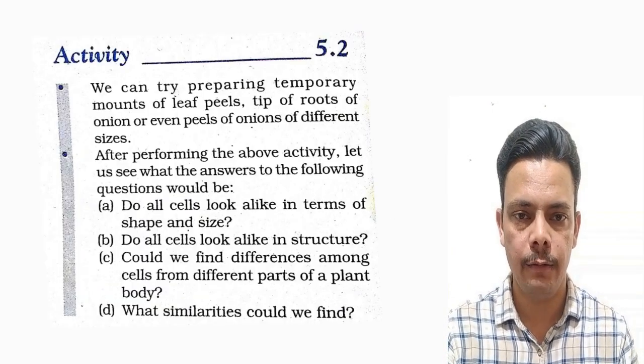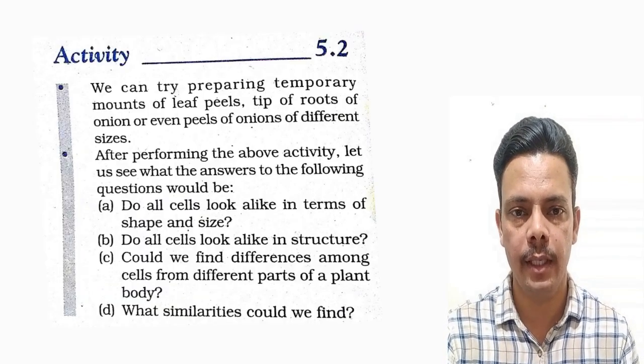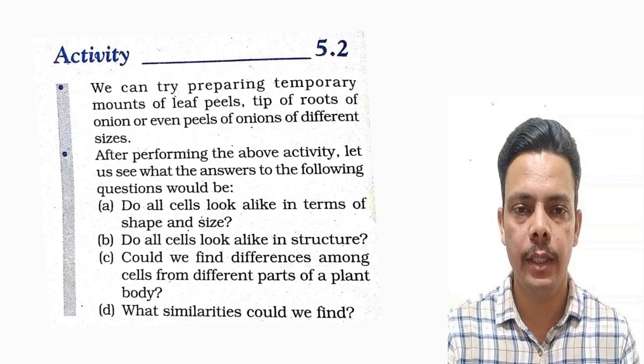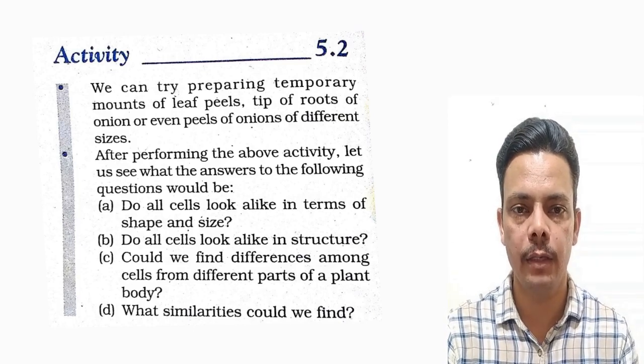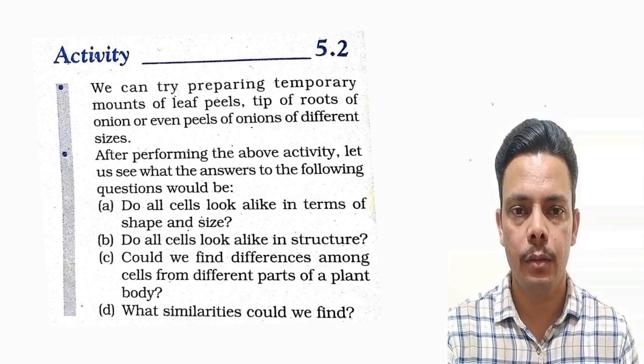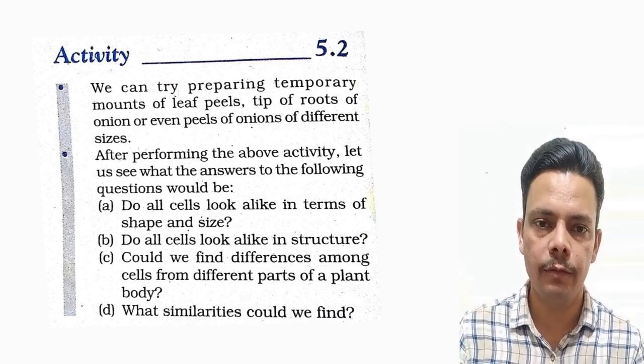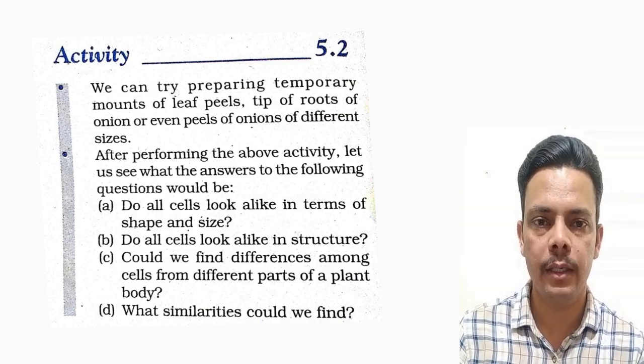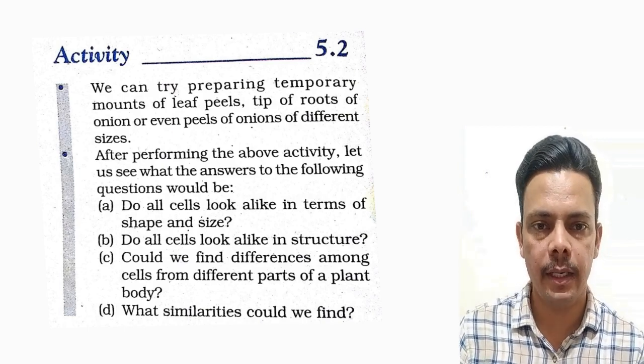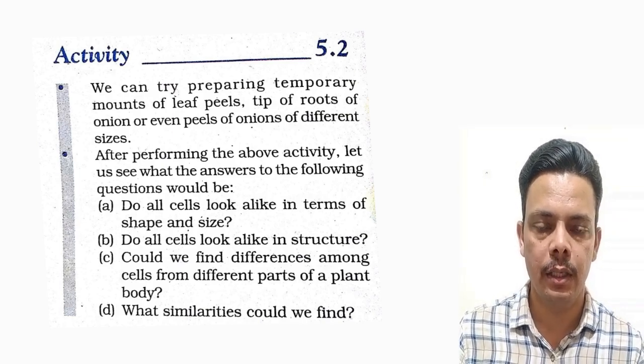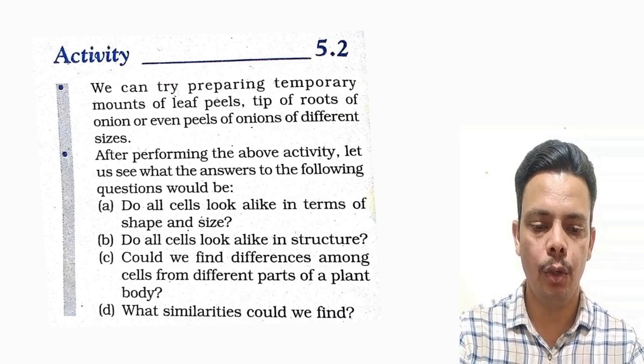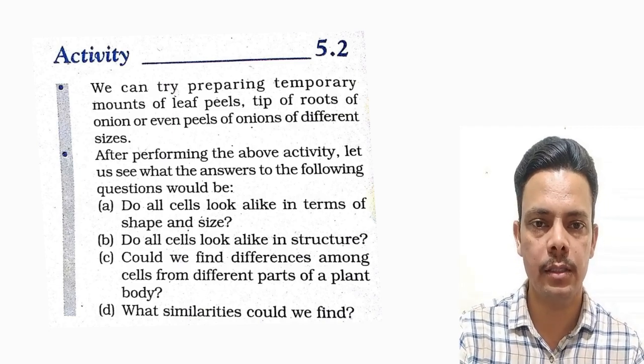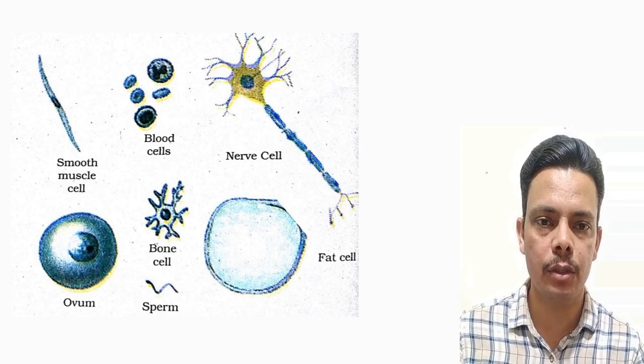See this activity 5.2. As you have made the slide of onion peel, now you can also make slides of the leaf, root and root tips. After observing all these cells, you know that there are not one kind of cells, they are all different. In activity 5.2, we have to answer some questions. The first question is: do all cells look alike in terms of shape and size?